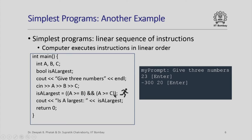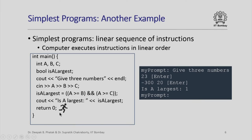Once the three integers are read, the computer executes the next instruction which is a logical expression. The computer evaluates this logical expression for the given values of a, b, and c — you can check that it evaluates to true. So the boolean variable 'is_a_largest' gets set to true. When the computer executes the subsequent output statement, we get 'is_a_largest:' followed by 1 — because a boolean value of true is output as 1. Then return 0 executes, control passes back to the operating system, and you get your prompt back.